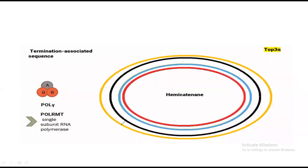Both the yellow strand synthesized against the light chain and the blue strand synthesized against the heavy chain are completed. At this point the two circular molecules are interlocked with each other, like two rings passing through one another, and they must be separated.